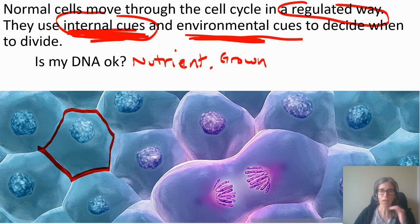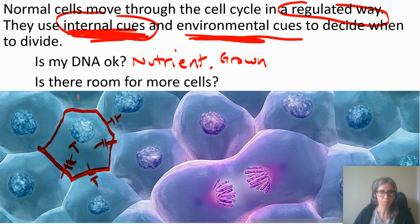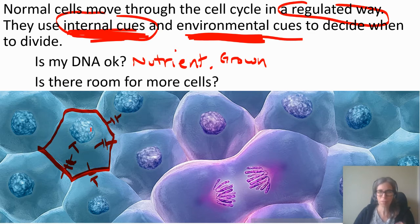Environmental cues does not mean outside the body — it means outside the cell. For example, this cell might have surface markers all over it, and the other cells have them too, so the other cells are saying: we're both cells of the same type, you shouldn't divide because there's plenty of us. So an external cue might be: is there more room for cells? All the other cells around it are giving input saying no, we're all set, you don't need to divide. Or maybe there's a cell releasing growth factors telling this cell it actually does need to divide.